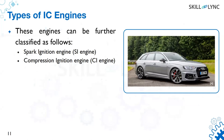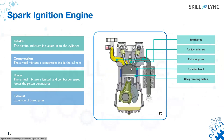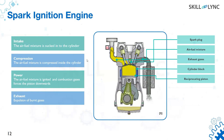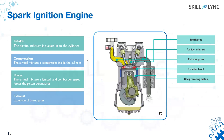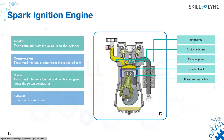Reciprocating engines can be further divided into spark ignition (SI) engines and compression ignition (CI) engines. In SI engines a spark plug creates combustion, causing the cylinder to move — this is a controlled combustion. There are four strokes: in the intake stroke, the air-fuel mixture is introduced into the cylinder.